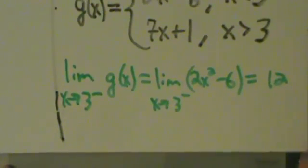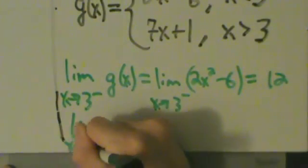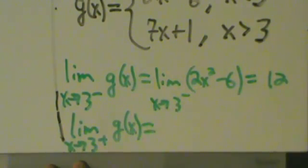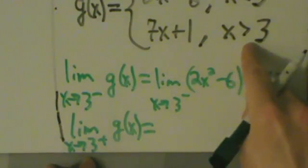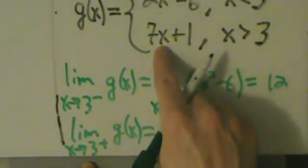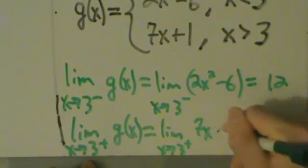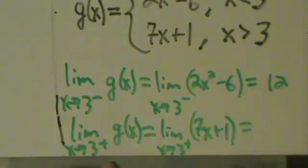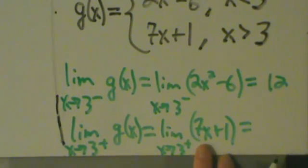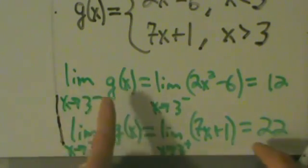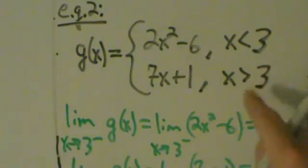Now for the right-hand limit: the limit as x approaches 3 from the right of g of x. Since x is always greater than 3 when approaching from the right, we're on the second piece: the limit of 7x plus 1. By direct substitution, 7 times 3 plus 1 equals 21 plus 1, which equals 22. So the left-hand limit is 12, the right-hand limit is 22, and since they're not equal, this function has a jump discontinuity at x equals 3.